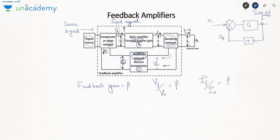The sampled signal passes through the feedback network, which has a gain of beta. Beta is the feedback gain — for example, Vf/V0 = beta, or If/I0 = beta depending on the situation. The output can be voltage or current, and the feedback can also be voltage or current, giving four possible combinations: feedback voltage/output voltage, feedback voltage/output current, feedback current/output voltage, and feedback current/output current. These four combinations correspond to the four types of amplifier: transresistance, transconductance, voltage, and current amplifier. Beta is the feedback gain.